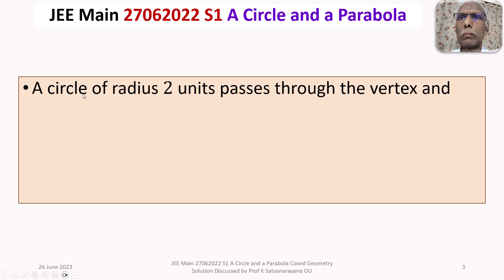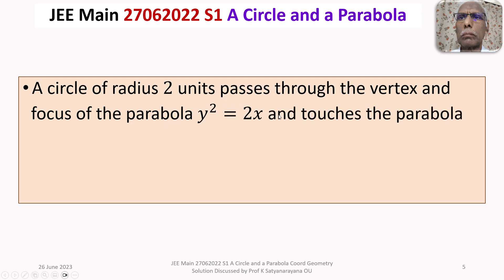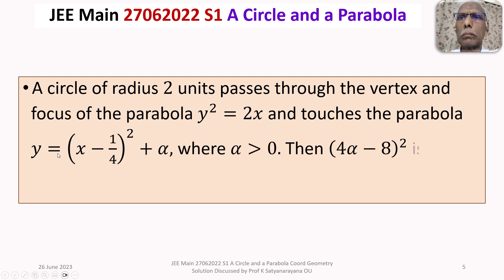A circle of radius 2 units passes through the vertex and focus of the parabola y² = 2x, and touches the parabola y = (x − 1/4)² + α, where α > 0. Then (4α − 8)² is equal to?